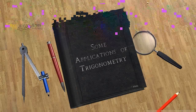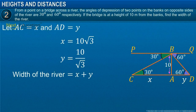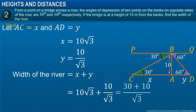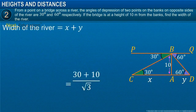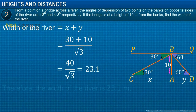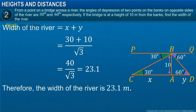From the figure, the width of the river is X plus Y. On substituting the values of X and Y and simplifying, we get the width of the river as 23.1 meters.